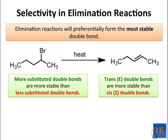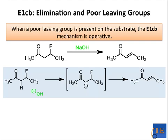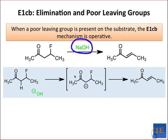When a poor leaving group is present on the substrate, deprotonation must precede loss of the leaving group. Like E2, the E1CB mechanism — so named because a conjugate base of the substrate forms during the reaction — requires a strong base. However, unlike E2, when the leaving group is poor, deprotonation does not lead to simultaneous loss of the leaving group.